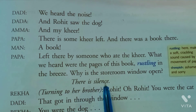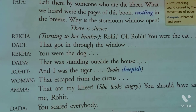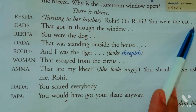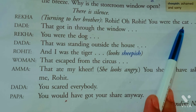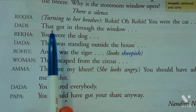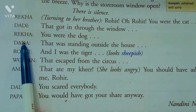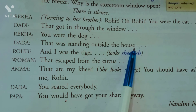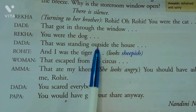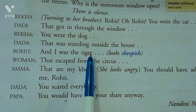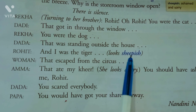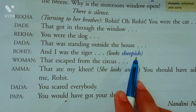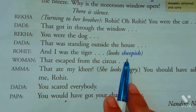Rekha turning to her brother bolti hai 'Rohit! Oh Rohit! You were the cat!' Dadi boli 'That got in through the window.' Rekha boli 'You were the dog!' Dada bole 'That was standing outside the house.' Rohit sheepishly — sheepish ka matlab hota hai jab hum kisi galti ko karke sharmaate hain — bolta hai 'And I was a tiger.'